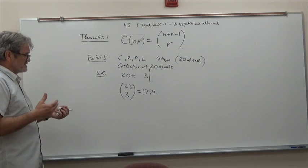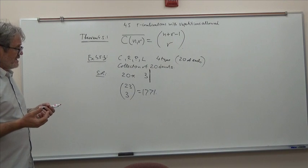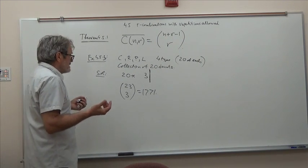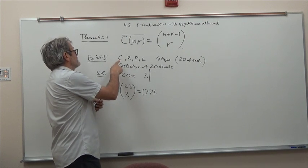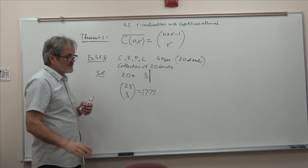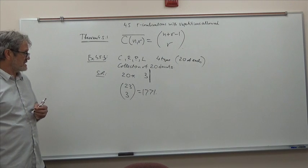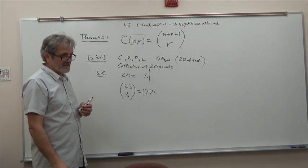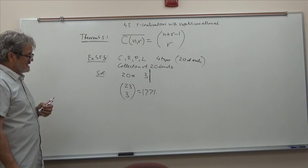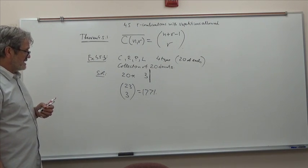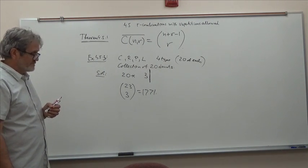You will see in the homework there are some variations. When certain types of donuts are a little short - what if I had only 18 of those? - then you have to remove cases that use heavily chocolate donuts or something like that. We have to do a little interventions, but this is the basic configuration. Alright.